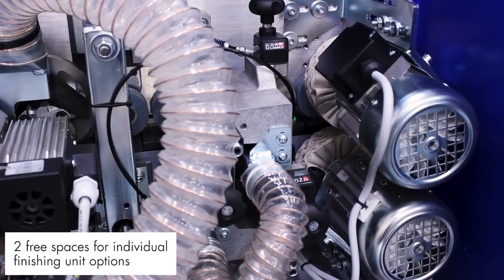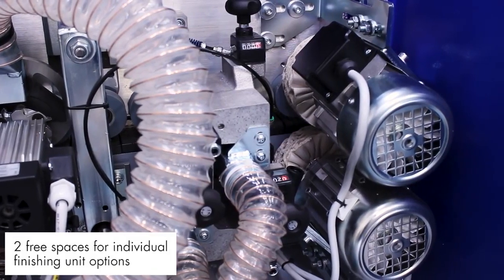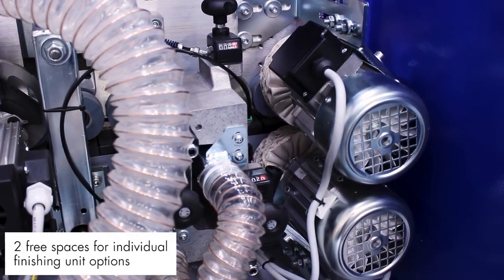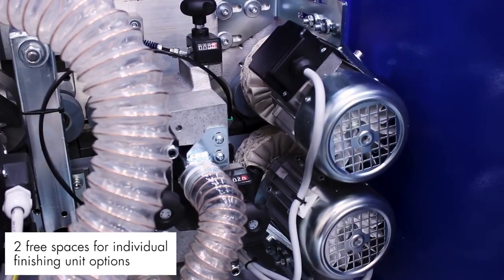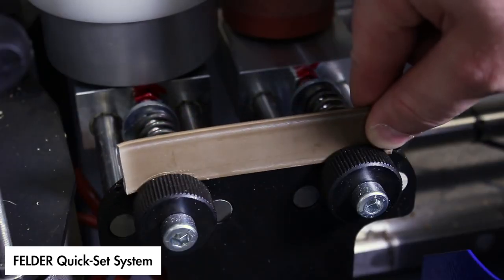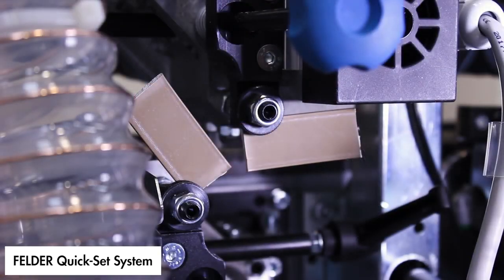Although the model requires only 2.3 square meters of floor space, the G360 offers two free spaces for individual options, allowing you to equip the machine to meet your requirements. The proven Felder quickset system guarantees exact changeover settings and quickest material change, and is also included on this compact yet capable edgebander from Felder.